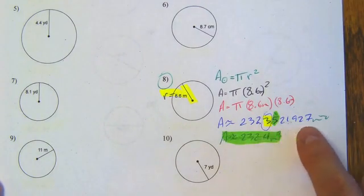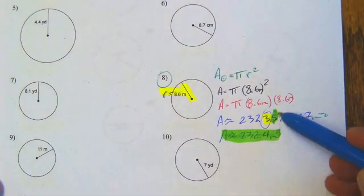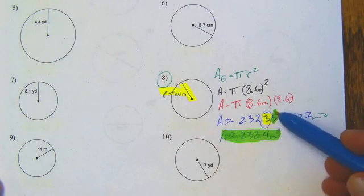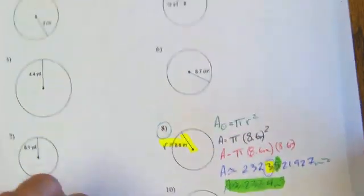Over here, we round to the nearest tenth. So this is the actual answer we've got on the calculator. Remember, if this is a 5 or above, we give it a shove. If it's 4 or below, we leave it alone. So it's 5 and above, so we shove this up to a 4, so the answer is 232.4 inches squared.